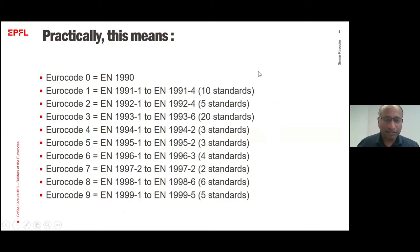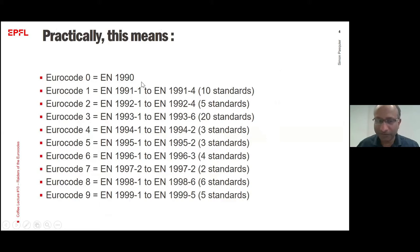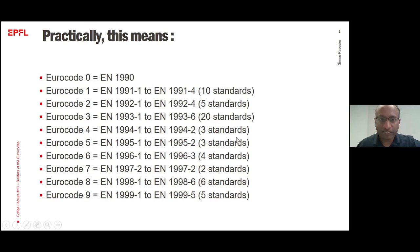Practically, this means that Eurocodes are also official European standard numbers. For example, Eurocode 0 is European norm EN 1990. This is not a year — this is a standard number. Eurocode 1 follows the same logic: EN 1991 to 1994. Here you have the number of standards per Eurocode, and if you make the total, you find again the number mentioned at the beginning: 59 standards.